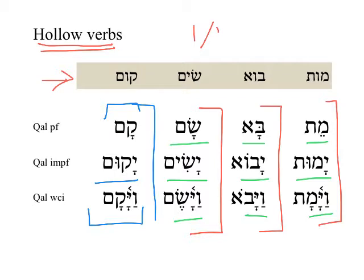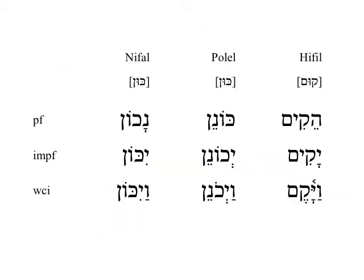This takes a little getting used to, but it's especially important to memorize our vocabulary so that we can recognize this phenomenon when it happens. In common words, knowing the vocabulary solves most of our difficulties for parsing. It's worth thinking through the different stems, like nifal, for the hollow verbs.